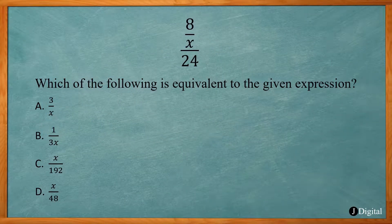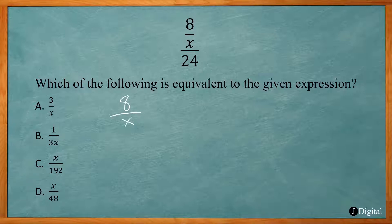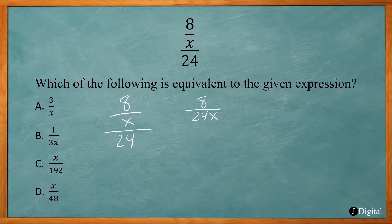This problem says which of the following is equivalent to the given expression. We have 8 over x, all divided by 24. Those are really division signs, so you have 8 divided by x, and all that divided by 24. Another way you can write this is 8 over 24x. You can reduce: 8 goes into 8 once, 8 goes into 24 three times, so the answer is 1 over 3x.